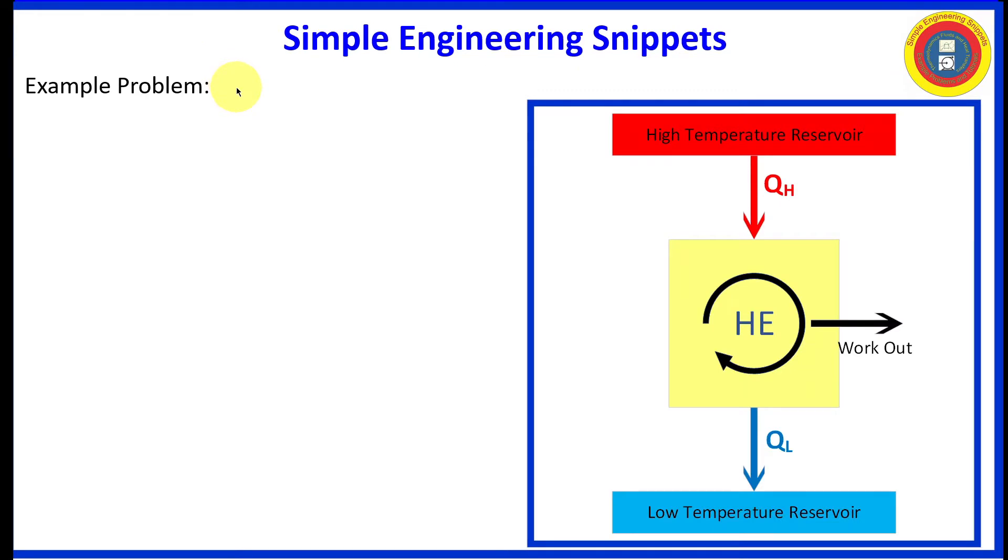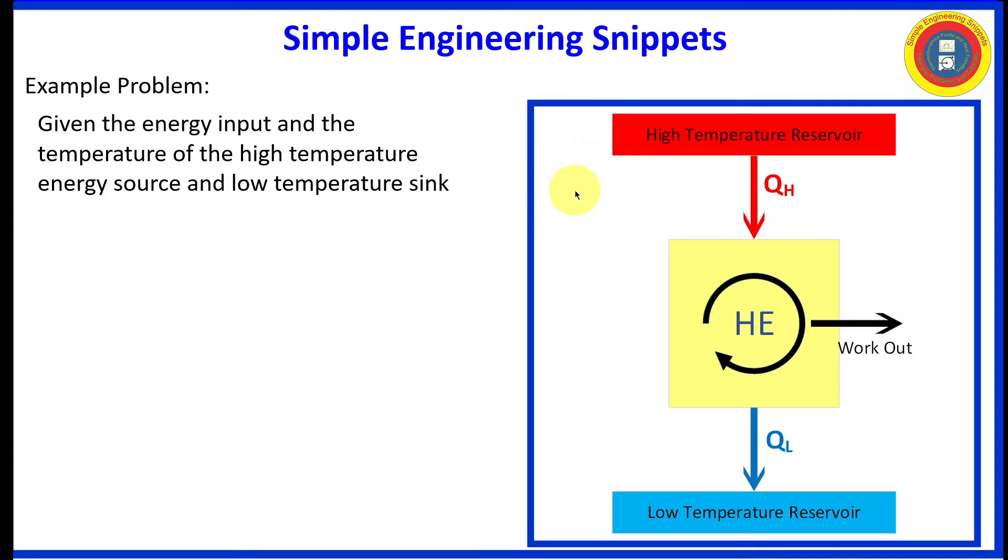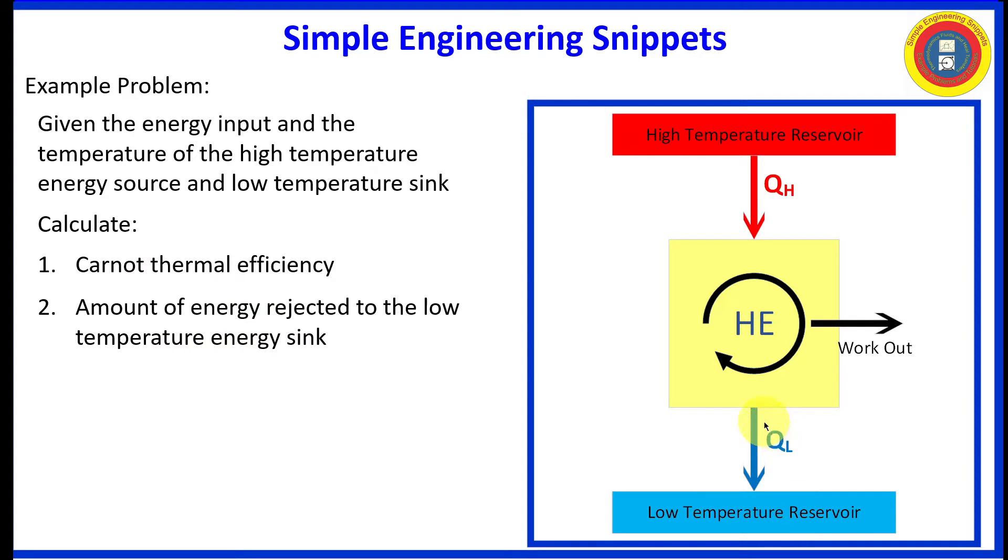After our review of the Carnot cycle, we're just going to work a quick example problem. We will be given the temperature of the high temperature reservoir, the energy input into the Carnot engine operating on a cycle, and the temperature of the low temperature reservoir. We will be asked to calculate the thermal efficiency, the Carnot efficiency, and the amount of energy rejected to the low temperature reservoir.